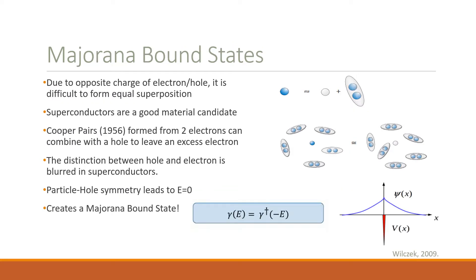Due to the opposite charge of electrons and holes, it is usually difficult to form equal superpositions. However, superconductors are a good material candidate to find Majorana fermions because of Cooper pairs, which were discovered in 1956. Cooper pairs, formed from two electrons, can combine with a hole to leave behind an excess electron. Due to the nature of superconductors, the distinction between hole and electron is blurred inside the superconductor. The particle-hole symmetry is described by this equation here, and to obtain the identity that the creation operator equals the annihilation operator, this determines that the energy of these states is equal to zero. This leads to a Majorana bound state.